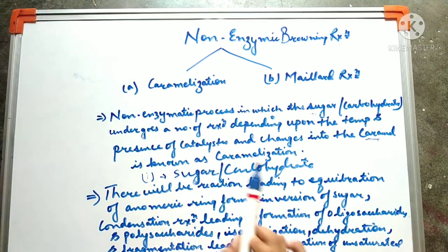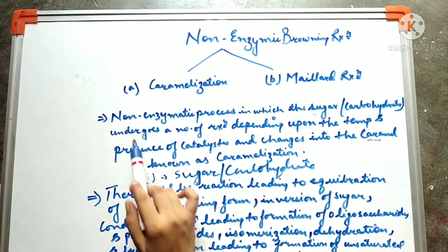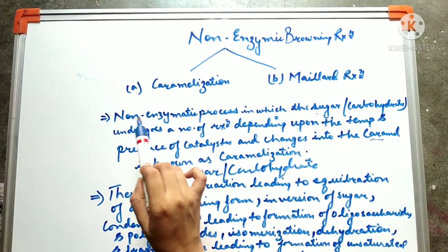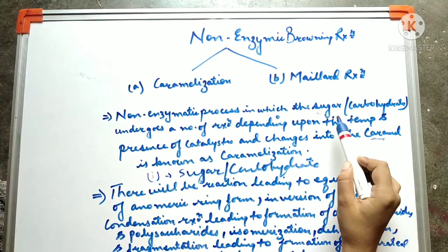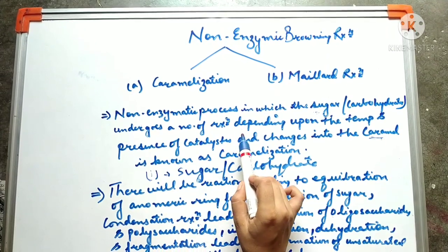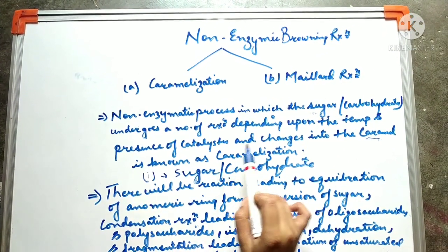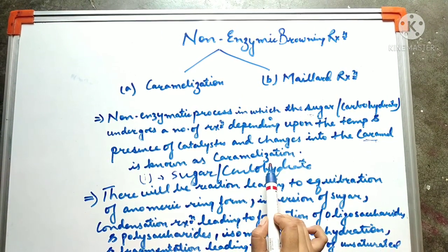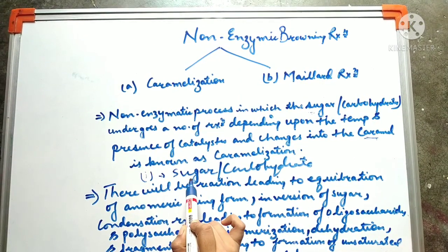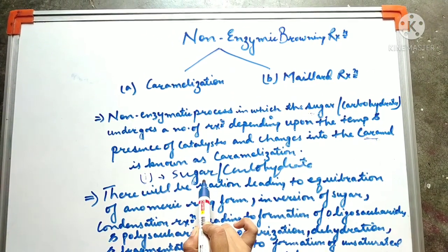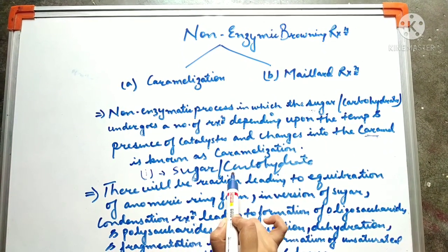First of all, let us learn about its definition. What is the definition of caramelization? It is a non-enzymatic process — we can also call it a non-oxidative process — in which sugar or carbohydrates undergoes a number of reactions depending upon the temperature and the presence of catalysts, and changes into caramel. Only sugar or carbohydrates plays the crucial role here.